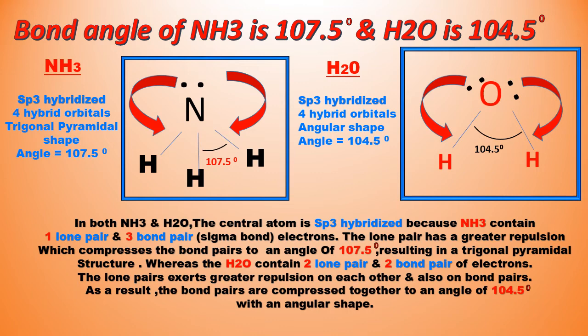Whereas the water molecule contains two lone pairs and two bond pairs of electrons. The lone pairs exert greater repulsion on each other and also on the bond pairs. As a result, the bond pairs compress to an angle of 104.5 degrees with an angular shape.